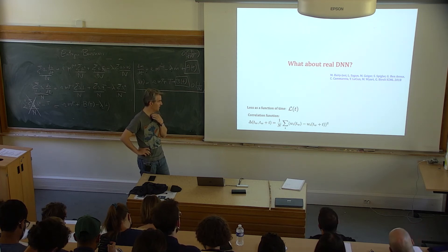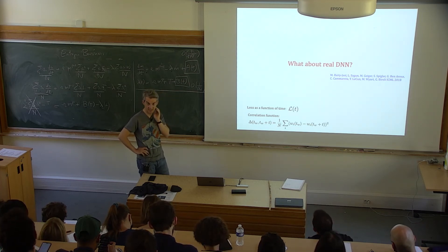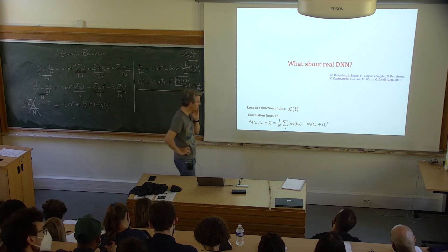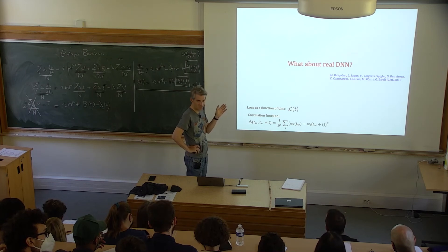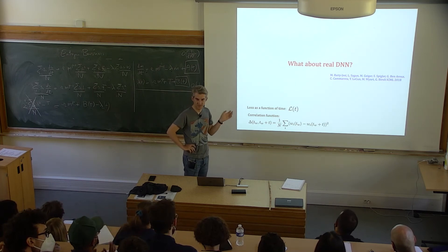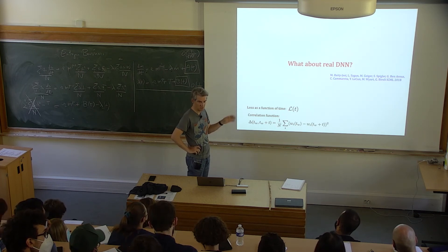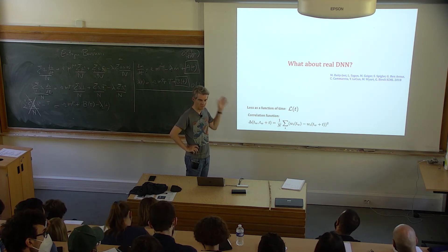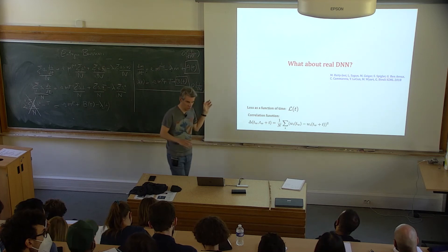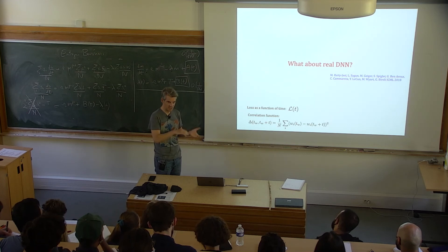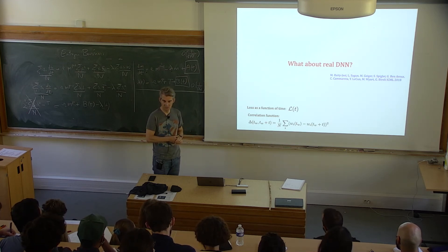So imagine trying to see whether the phenomenology I described works in real DNNs. This is empirical work, like doing an experiment in physics. The phenomenology I described includes regimes where you don't find the signal and the system shows aging dynamics, and then at a certain point it finds the signal. What kind of dynamics do you find in real DNNs?